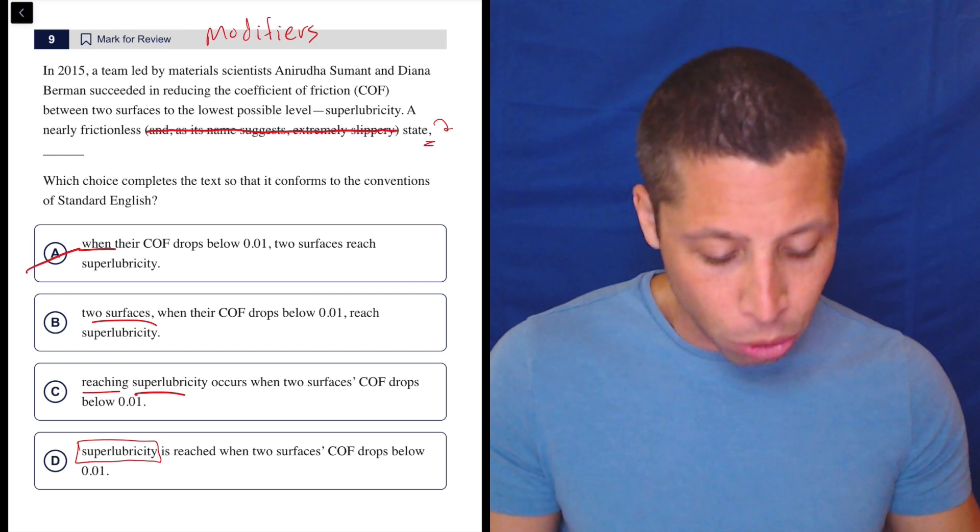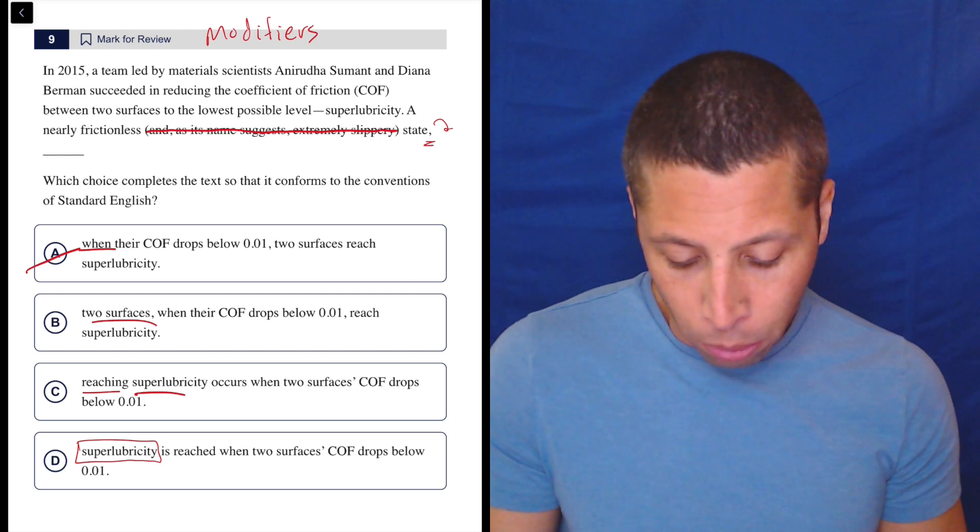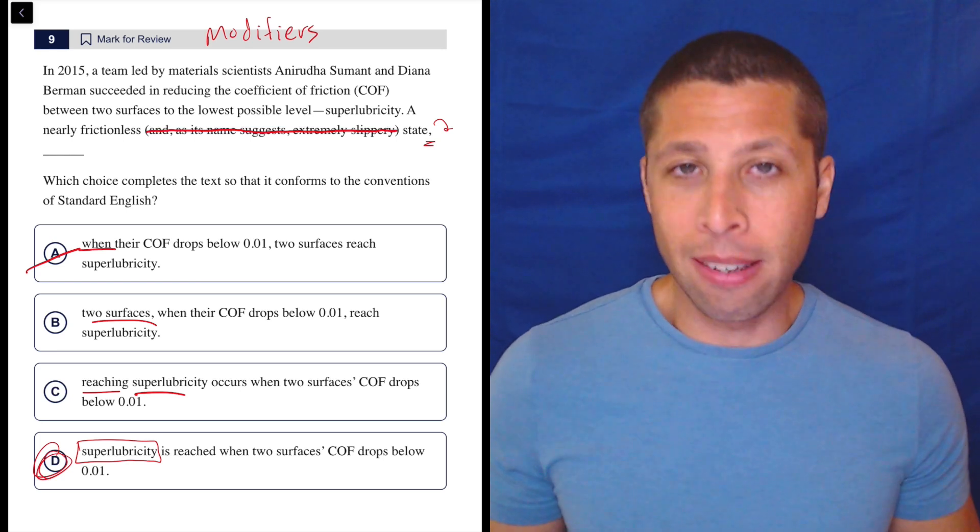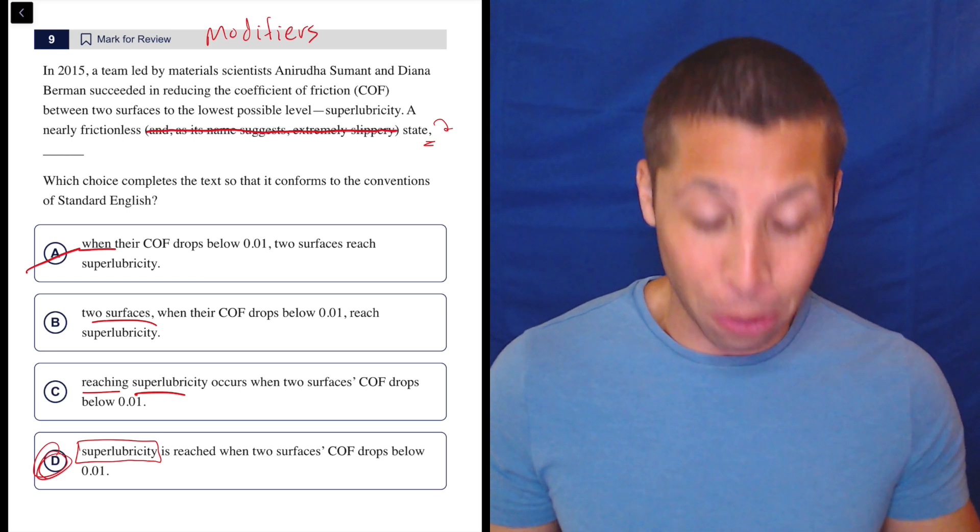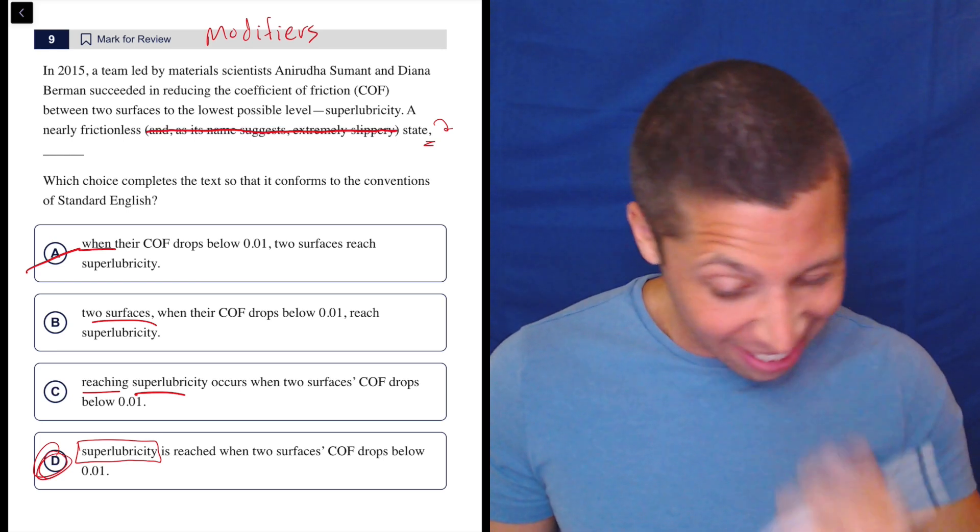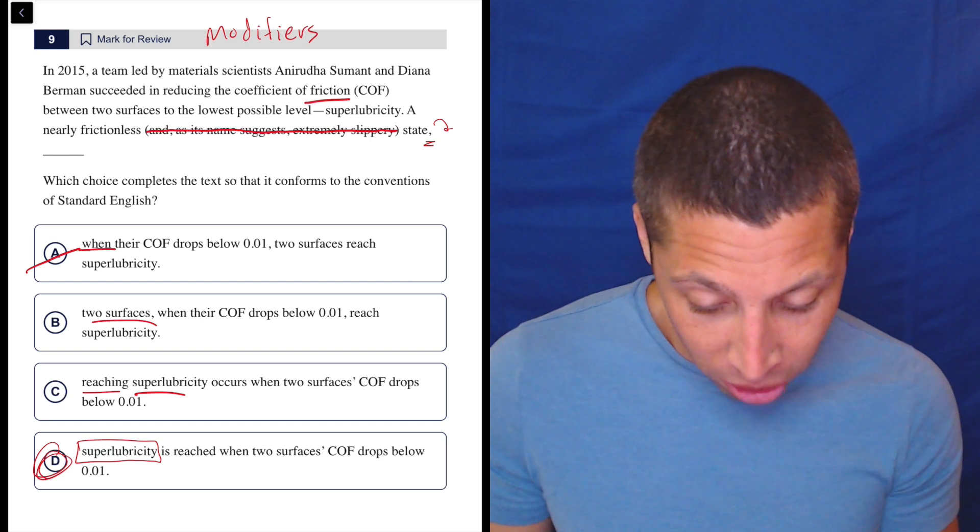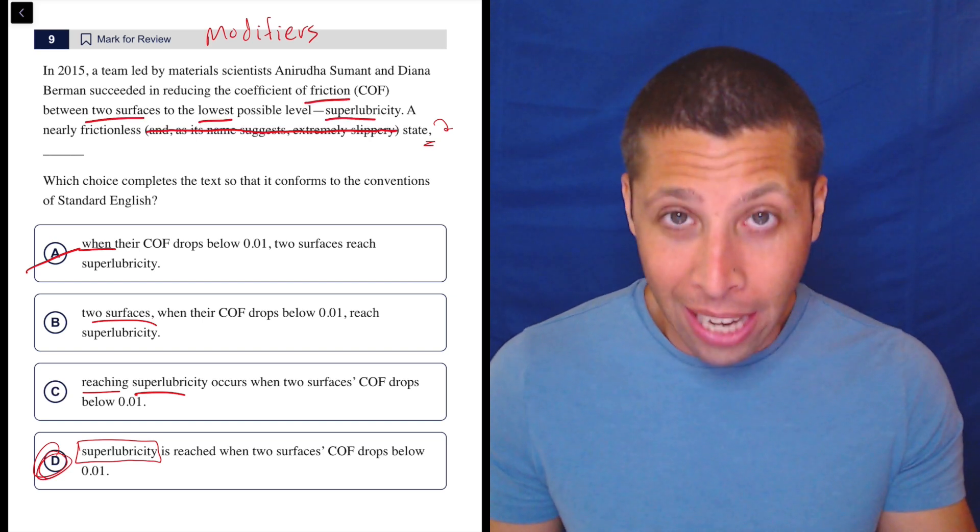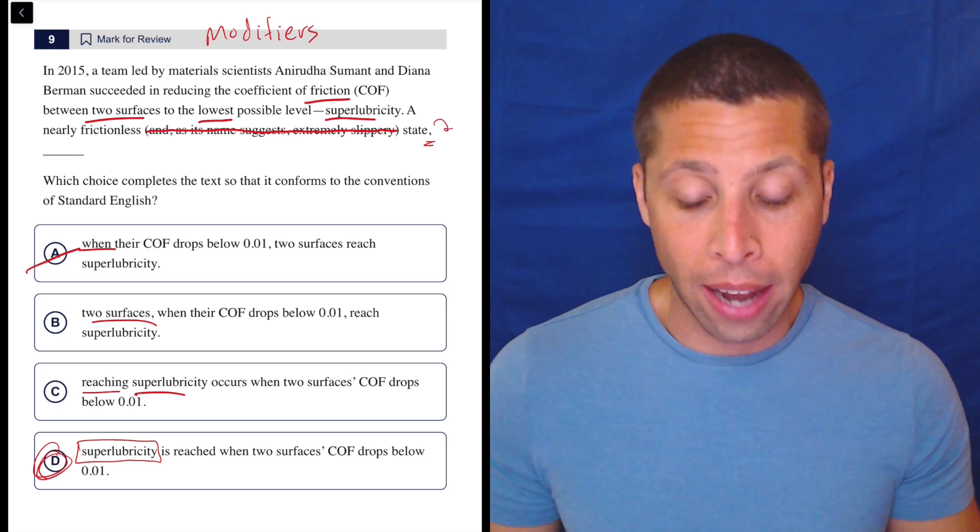Superlubricity is reached when two surfaces COF drops below 0.01. So it's definitely D. I would not be in any doubt here. I have no idea what superlubricity is. I guess it kind of says it. It's when the friction between two surfaces is as low as possible level. They define it. But I don't really care. It's much more structural than that.